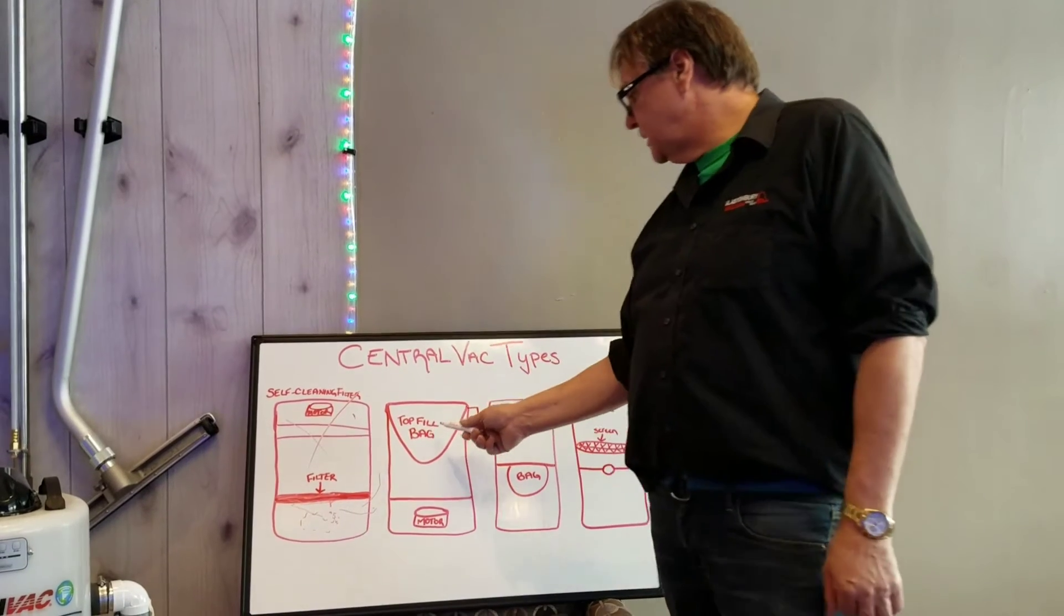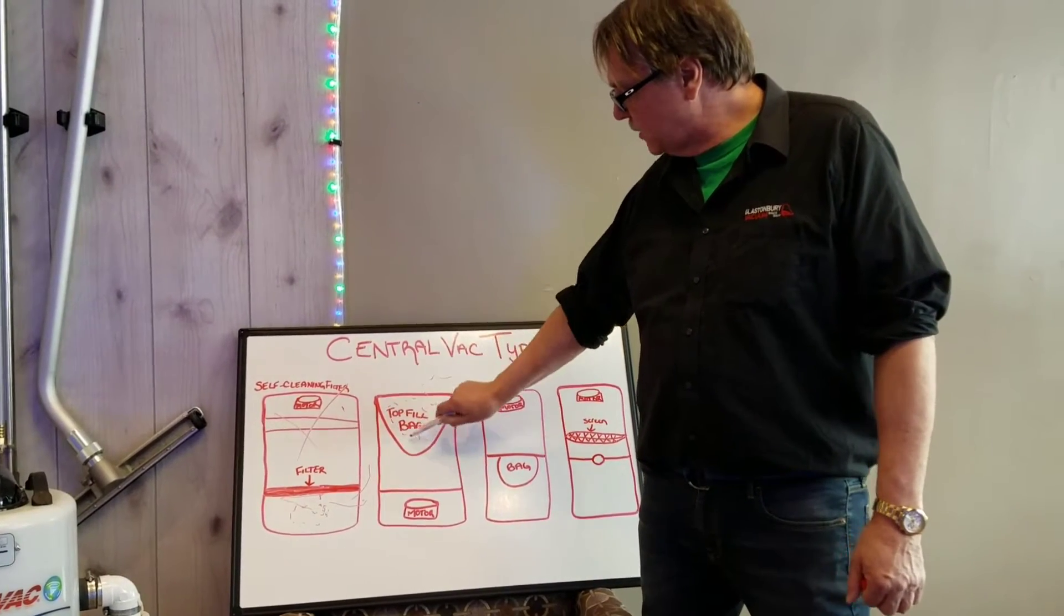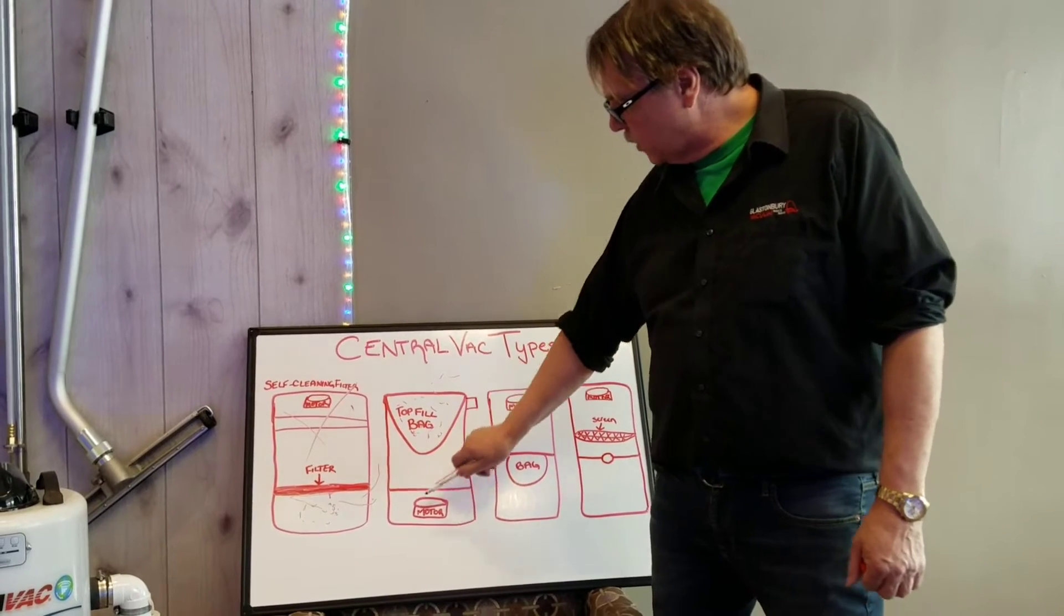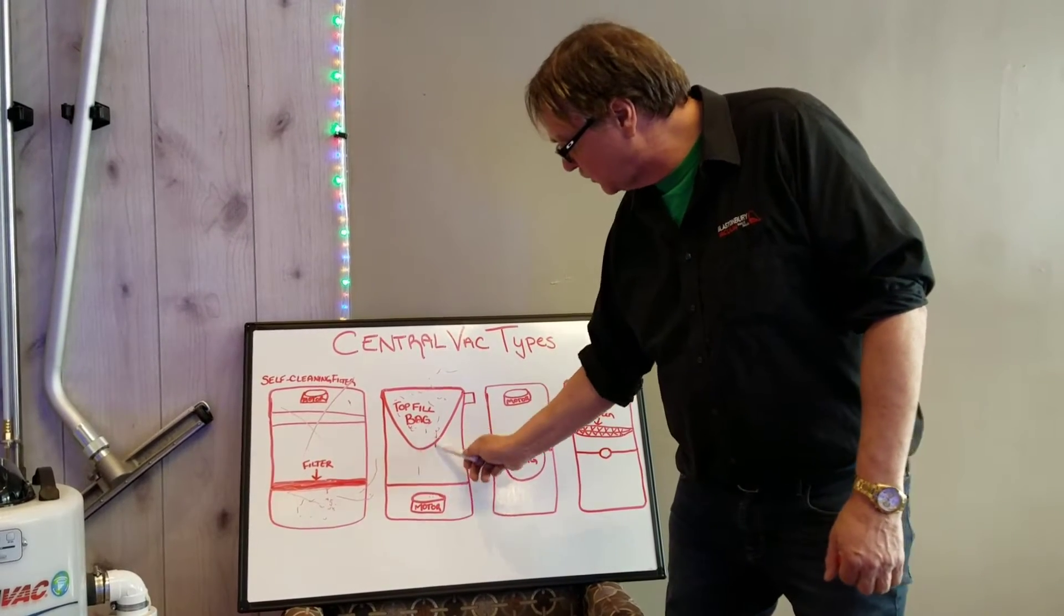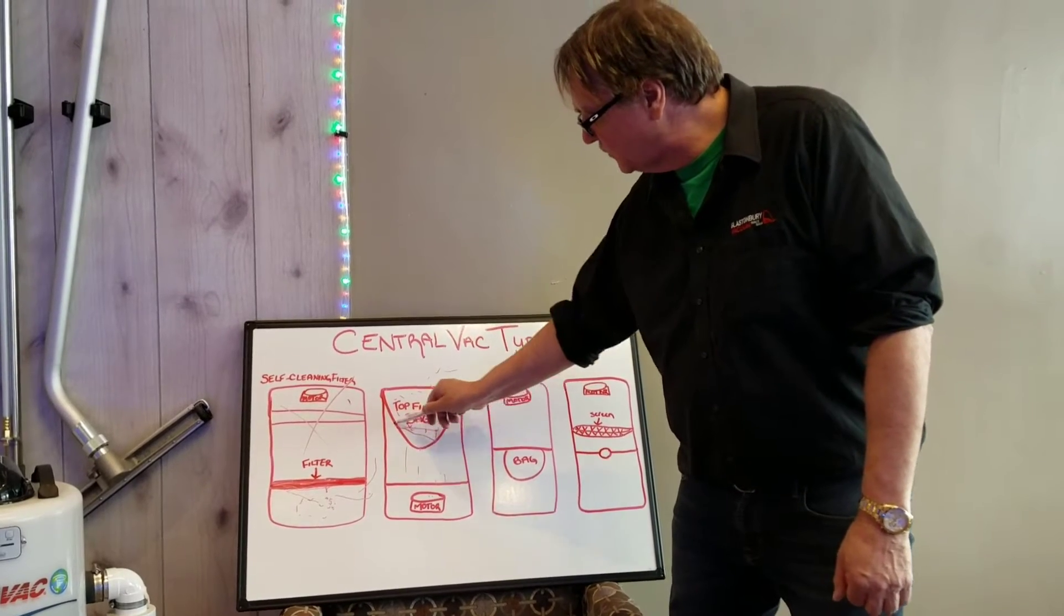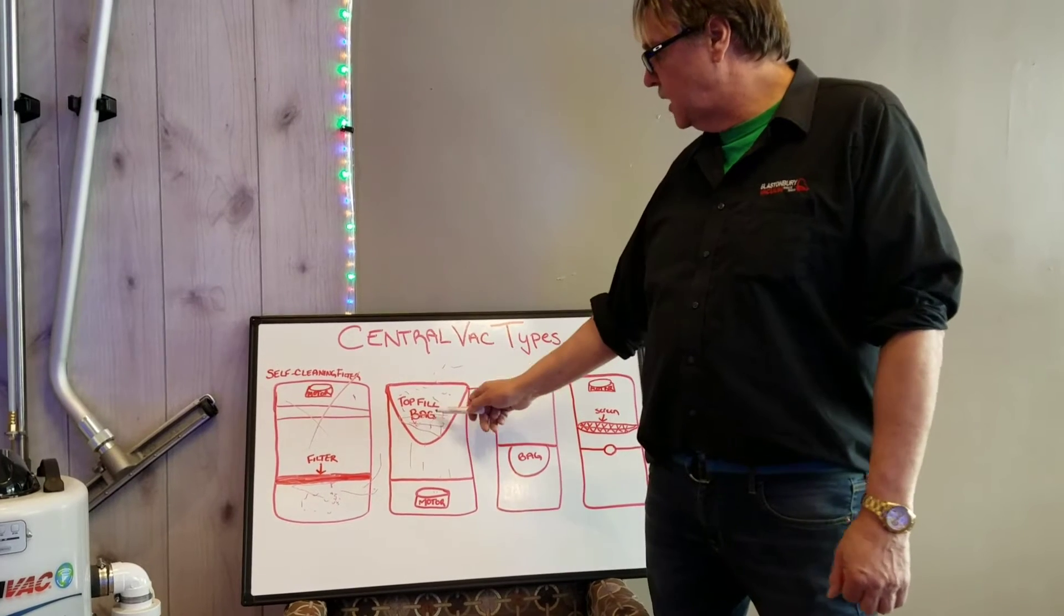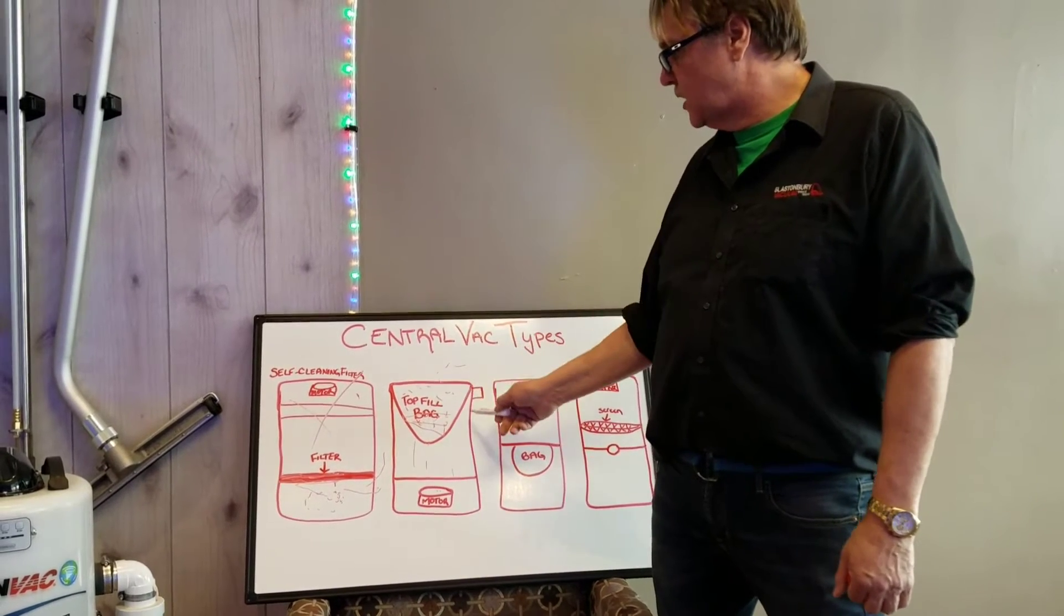The next system is, the dirt comes in from the top and fills up the bag. Now the bag is here, and the motor is below, so it's trying to suck through all the dirt down to the bottom. So you're losing suction as the bag keeps filling up. This isn't as bad as that, but still, it's not as good as some of the other systems that are made.